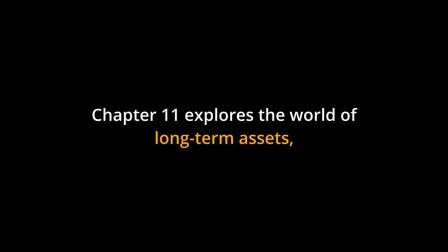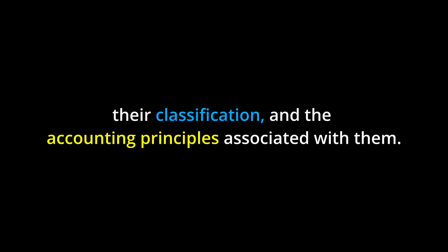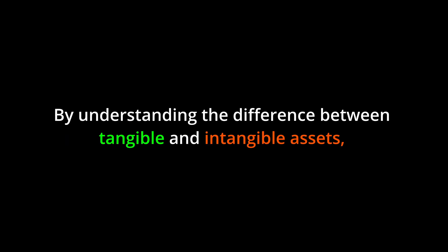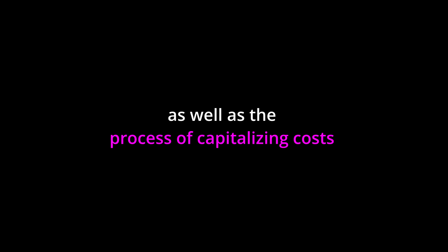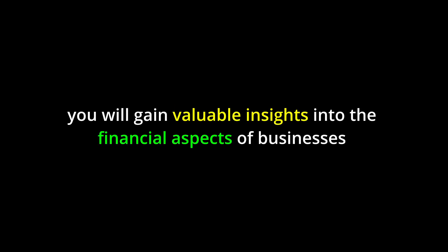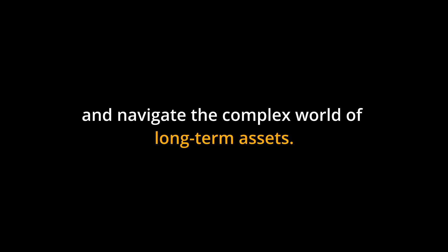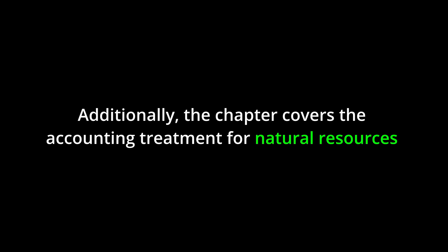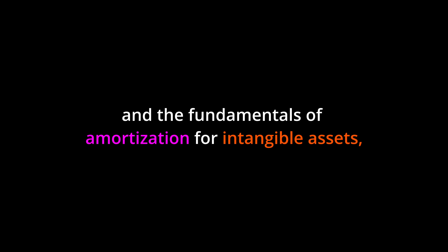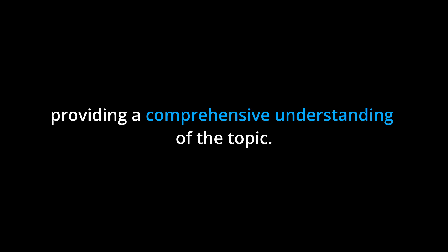Chapter 11 explores the world of long-term assets, their classification, and the accounting principles associated with them. By understanding the difference between tangible and intangible assets, as well as the process of capitalizing costs and allocating them over an asset's useful life, you will gain valuable insights into the financial aspects of businesses. Whether you are a business owner or a consumer, this knowledge will empower you to make informed decisions. The chapter also covers the accounting treatment for natural resources and the fundamentals of amortization for intangible assets.